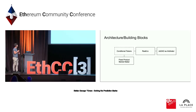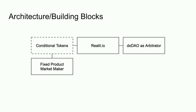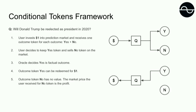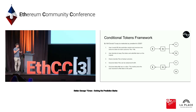There are a few building blocks required to make OMEN work. One is the conditional tokens framework, which basically allows you to use an elemental mechanism to create prediction markets. To give you an example: if you would like to create a market — will Donald Trump be re-elected as president in 2020? — the conditional tokens framework allows you to register this event, and then any user can convert collateral, in this case DAI, into outcome tokens: a yes token and a no token.